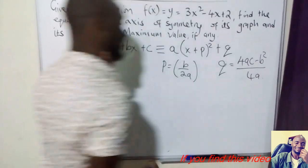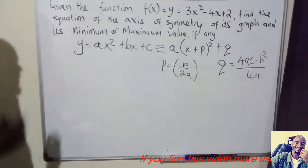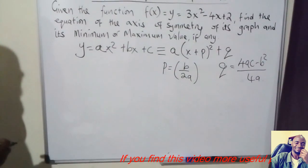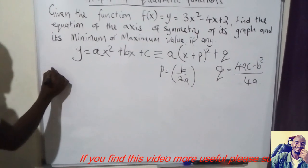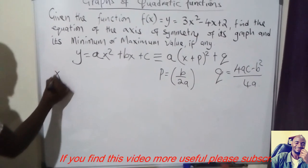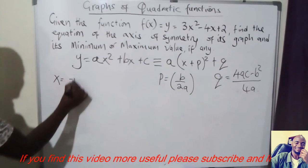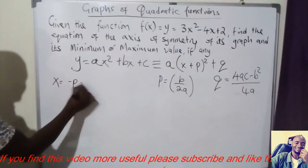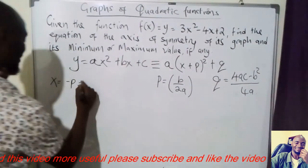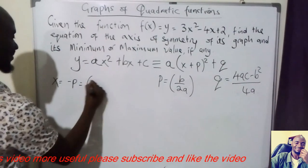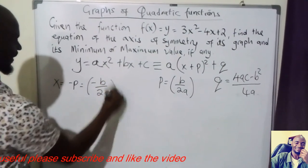What we are looking for is the axis of symmetry. The axis of symmetry, which is x, is equal to negative p, which equals negative b over 2a.